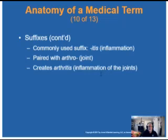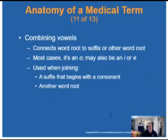Suffixes convey various meanings. Let's try -itis, which means inflammation. Carditis would be inflammation of the heart muscle. Pneumonitis — pneumo having to do with the lungs — would be inflammation of the lungs. Arthro means joints, so arthritis is inflammation of the joints. That's how this works.